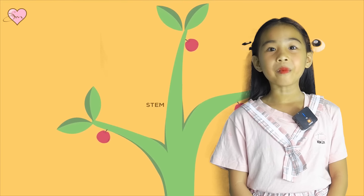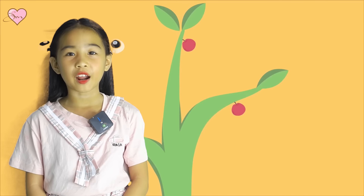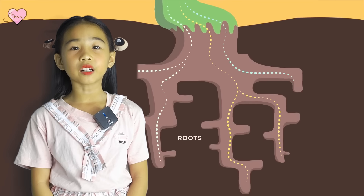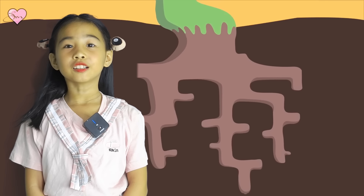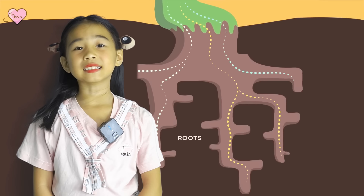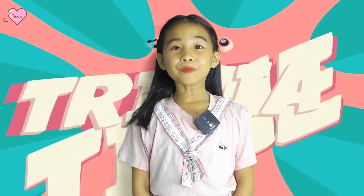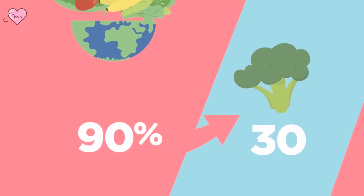This is a stem. A stem acts like a pillar of a plant — it holds the plant upright and carries water, food, and minerals to the parts of the plant from the roots. The roots help to absorb water and minerals from the soil and also act as an anchor. When the winds are too harsh, the roots make sure that the plant stays firm in the soil and doesn't get carried away. Trivia time! Did you know 90% of the food that you eat comes from 30 species of plants? But the earth has more than 80,000 species of edible plants.